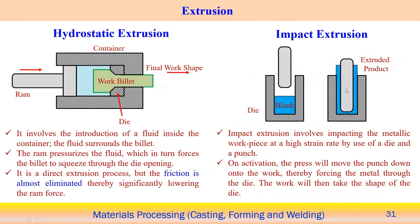In the hydrostatic extrusion process, a hydraulic RAM is used and the friction is almost eliminated. A fluid chamber is introduced inside the container; the fluid surrounds the billet and creates pressure over it, forcing the work piece through the die opening. Since friction is almost eliminated, the applied load can be significantly reduced — that is the main advantage of this process.